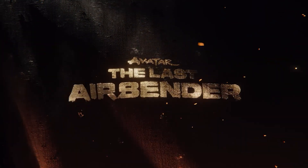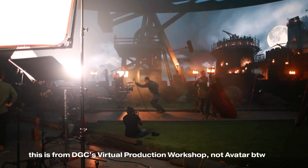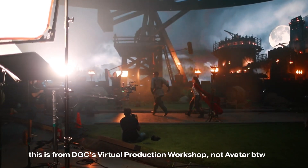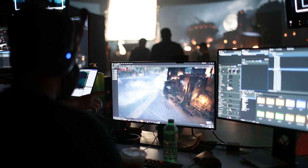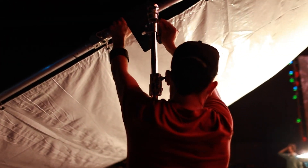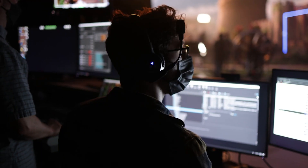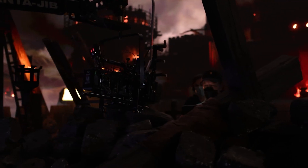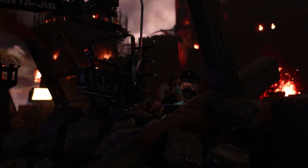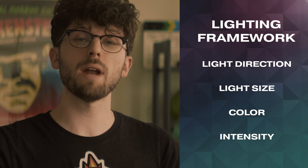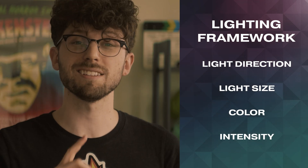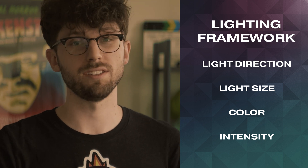When you're using Unreal on set, you need to go through 20 or 30 lighting setups in a single shoot day, so you need to be fast when adapting the lighting in the CG world to the practical lights on set. I developed a framework for myself to easily match the light direction of any shot — whether it's the on-set lights in front of you or a still from your favorite movie. That framework is: light direction, light size, color, and intensity.